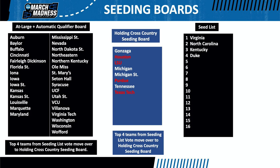On this screen, you'll see the top four teams from that vote in red. They are Houston, LSU, Purdue, and Texas Tech. They join the four from holding — Gonzaga, Michigan, Michigan State, and Tennessee — for the next ranking. This next vote will determine the four number two seeds.